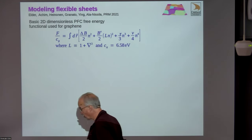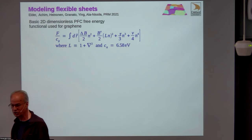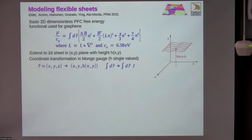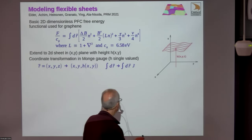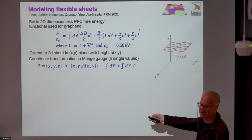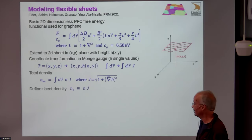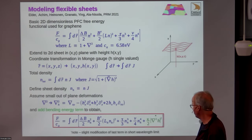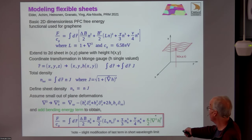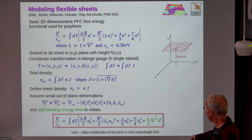That covered purely two-dimensional sheets. In some cases we're worried about the fact that they can't buckle to release strain. So we did the simplest thing: introduce another field—the height H of the sheet—and make a variable change from X, Z to X, Y, and H. We then end up with an expression where all Laplacians include gradients in the height, and we added a bending energy term by hand.